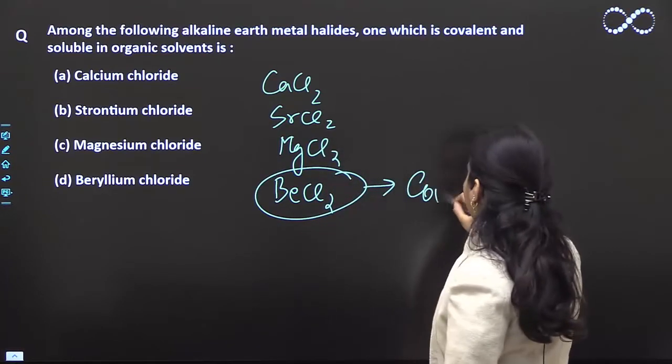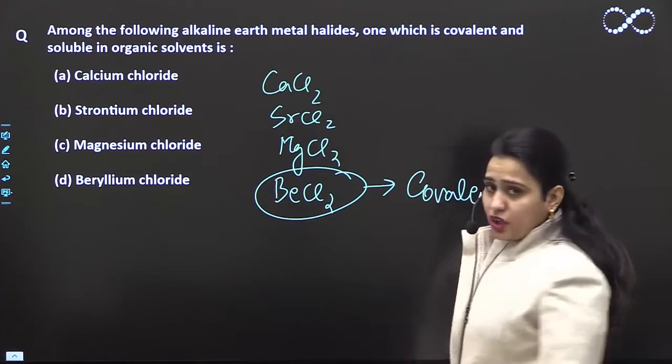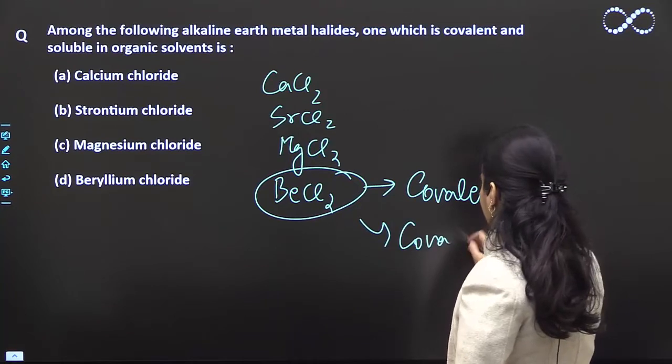Beryllium chloride will be the one which is covalent. This will be predominantly covalent due to the covalent character.